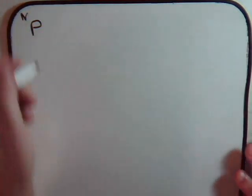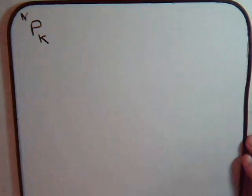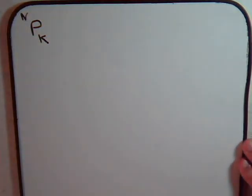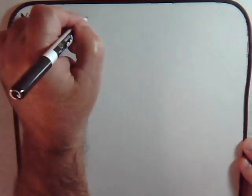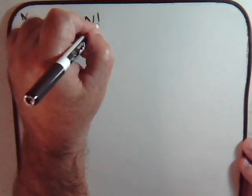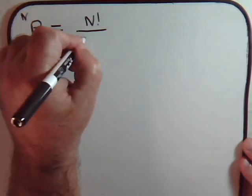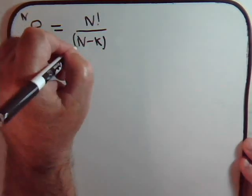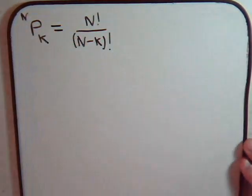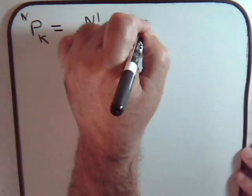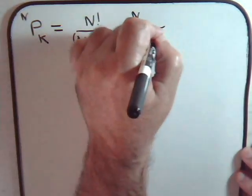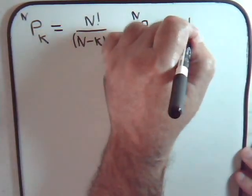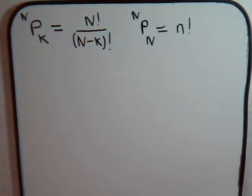For example, if we have n number of state options and we select k of them, the number of ways that we can do that is given by this formula. Or if we select n number of objects, this comes out to be equal to n factorial. We have covered all this in the earlier videos.